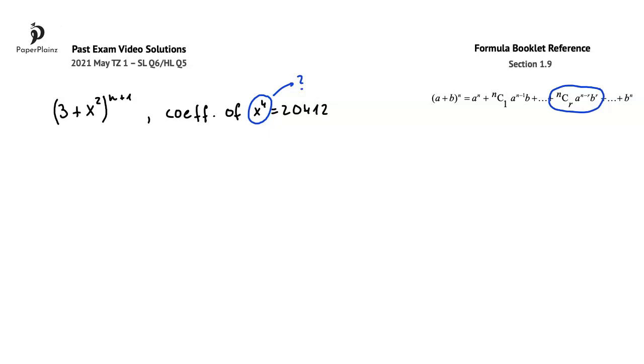In the formula, n is the power of the expansion, which in our question here is n plus 1. Then we have n choose r in the lower index, which we don't know for now.